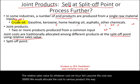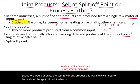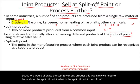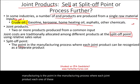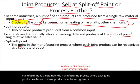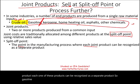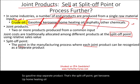Now we need to learn about the split-off point. The split-off point is the point in the manufacturing process where each joint product can be recognized as a separate product. So gasoline — stop, separate product, that's the split-off point. Kerosene — stop. Home heating oil — stop. Asphalt — and so on.